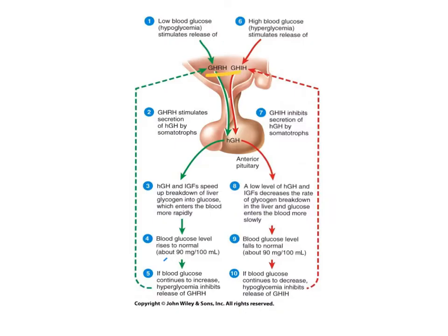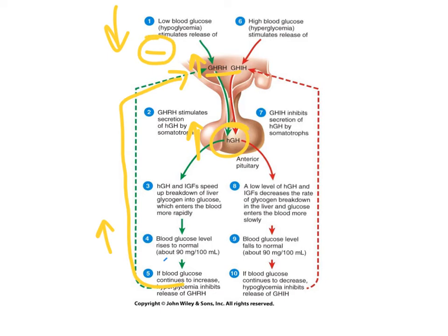In addition to the antagonistic control over human growth hormone release at the level of the hypothalamus, there are also individual negative feedback loops. If blood glucose levels decrease, that increases the level of the releasing hormone, which increases human growth hormone, bringing blood glucose back to normal. Should blood glucose rise above normal, a negative feedback loop will inhibit the releasing hormone.